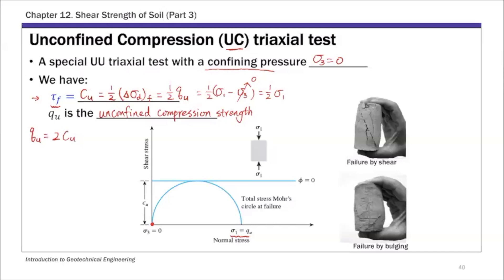On the right-hand side there are two pictures showing specimens that failed during the UC triaxial test. The top one shows a specimen that failed by shear — you can see a clear shear failure plane in the specimen. The bottom one shows a case where the specimen failed by a phenomenon called bulging, where there is an expansion towards the bottom with no clear single failure plane, but rather a couple of failure planes in the bulging zone.